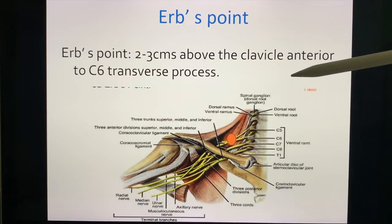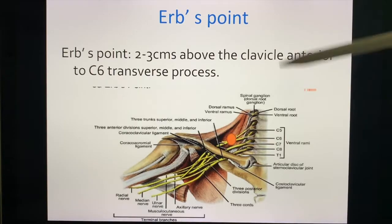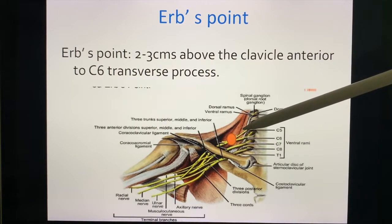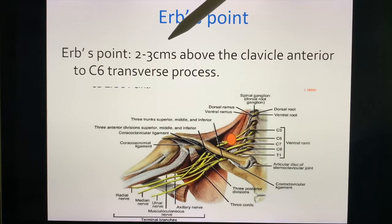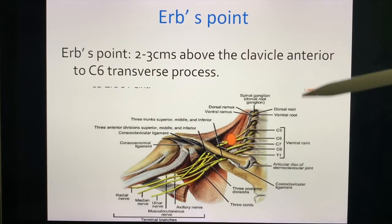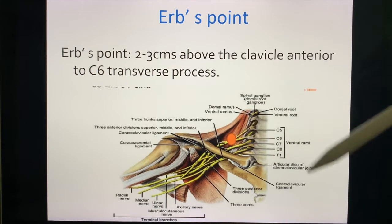Some salient features. We have ERB's point, which is located near the C6 transverse process — approximately two to three centimeters above the clavicle, and anterior to the cervical six transverse process. The significance of ERB's point is that this is the most superficial passage of the brachial plexus.